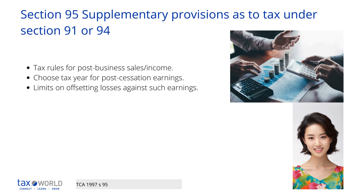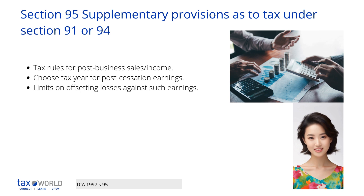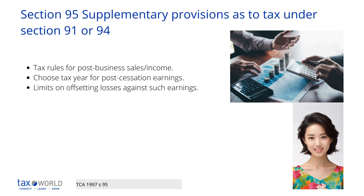Losses or capital allowances that were not used before the business ceased can be offset against post-cessation receipts. However, you can't claim this if you've already deducted it under another tax rule, and you can't deduct losses or allowances more than once against post-cessation receipts. Relief is applied to earlier years first and then later years. You cannot offset a loss against profits of an earlier period.